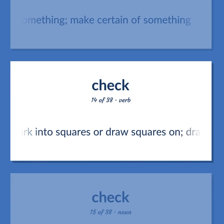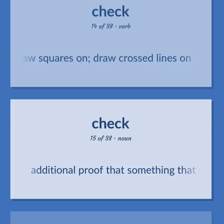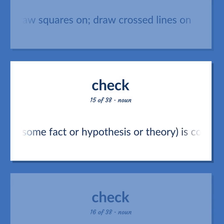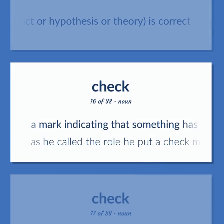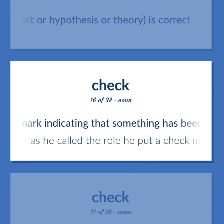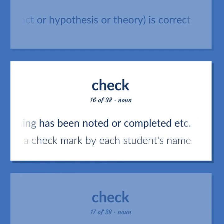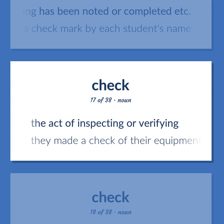Mark into squares or draw squares on; draw crossed lines on. Additional proof that something believed — some fact or hypothesis or theory — is correct. A mark indicating that something has been noted or completed. As he called the role he put a check mark by each student's name. The act of inspecting or verifying. They made a check of their equipment.